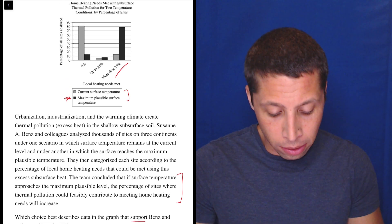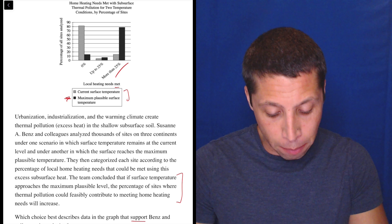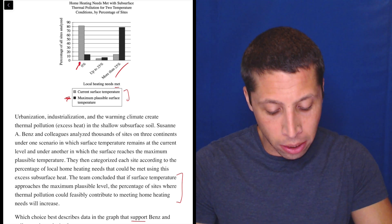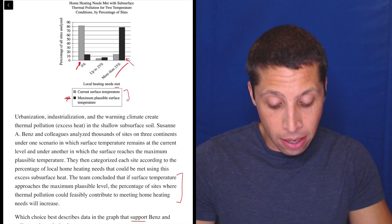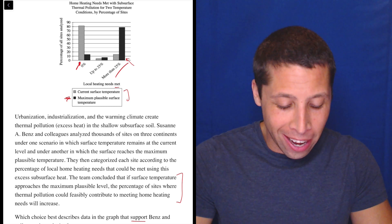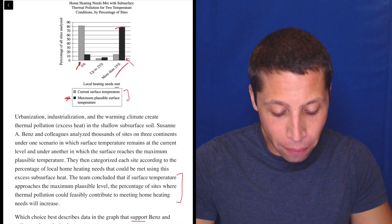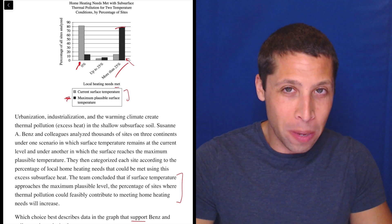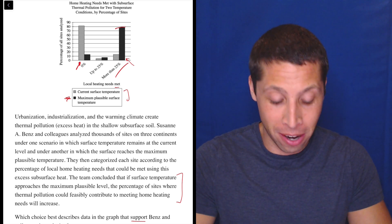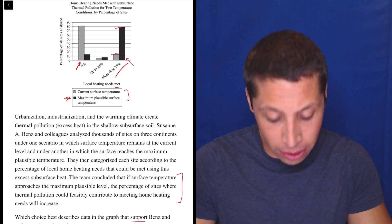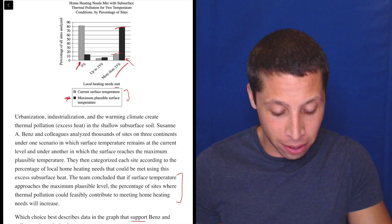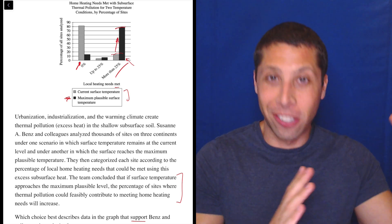If the surface temperature approaches the maximum plausible level, as we get to the black, the percentage of sites where thermal pollution could feasibly contribute to meeting home heating needs will increase. Okay. Well, local heating needs met. It looks like for the current temperature, it's zero, right? That's this box here. And then as we get to the higher temperature, more than 25%, 80% or about that of the sites will be able to meet more than 25% of their home heating needs with this new higher temperature, right? Whereas before it was only 15% of the sites. So it basically increased the temperature. This changes, this goes up.